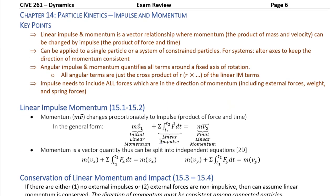Chapter 15 is impulse and momentum. It is like a hybrid of Newtonian kinetics and work and energy — it shares Newtonian's vector-based relationship, but similarly to work and energy, you swap momentum for impulse versus swapping energy for work. There is only one momentum term and it deals with velocity. Everything else — gravitational weight, friction forces, spring forces, and external forces — all gets lumped into impulse. Impulse is the product of force and time, not force alone.